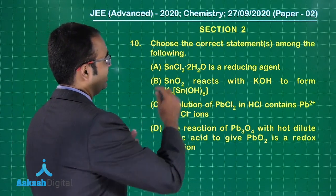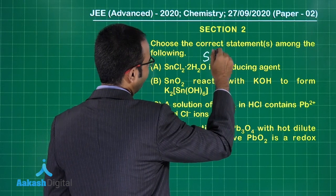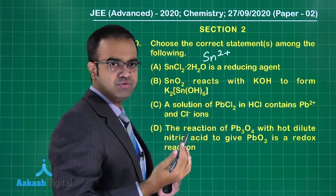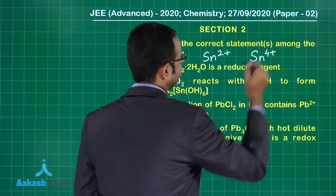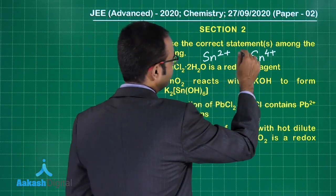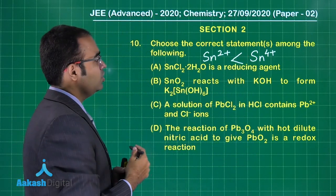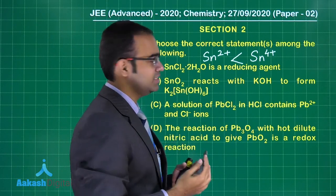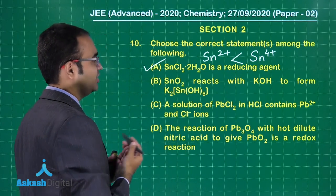For the first statement, SnCl₂: the oxidation state of Sn is +2. If it is acting as a reducing agent, it will get converted to Sn⁴⁺. Sn⁴⁺ is more stable compared to Sn²⁺, so this will act as a reducing agent. First option is correct.